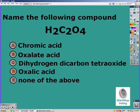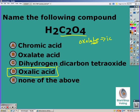Pause the video and try this one on your own. It starts with hydrogen, so we know that it's an acid. C2O4 is oxalate, so ATE turns to ic, and we have oxalic acid. This is why knowing the endings of the polyatomic ions are very important.